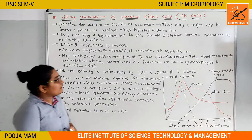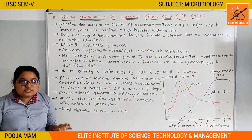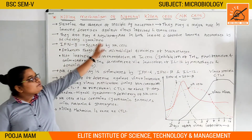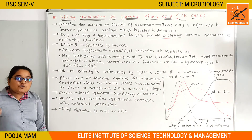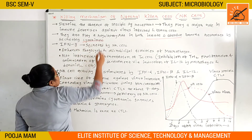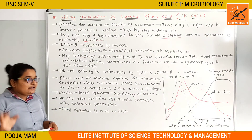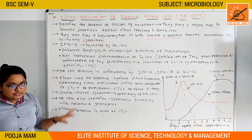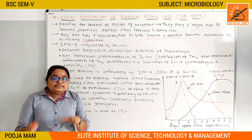Natural killer cells also play a role in both innate and adaptive immune response by secreting cytokines. They are part of the innate immunity, and the cytokines secreted by natural killer cells regulate both the innate and adaptive immune responses.